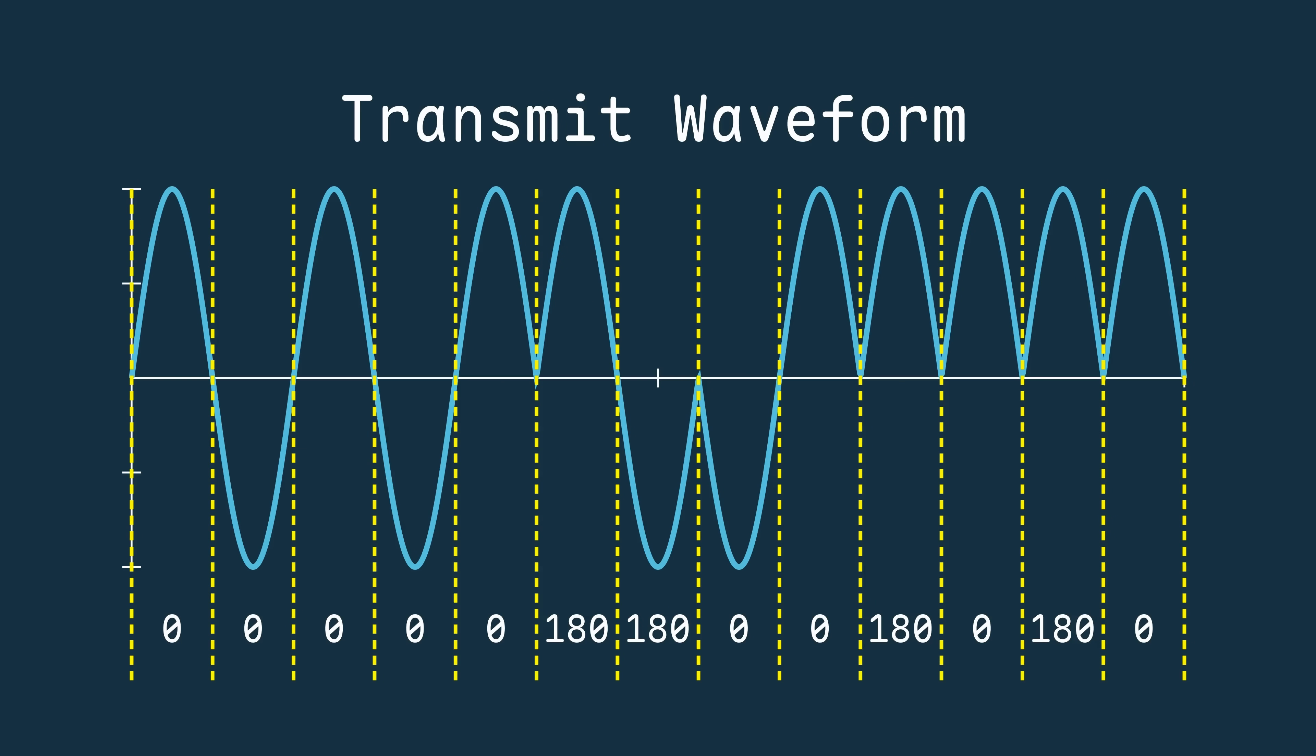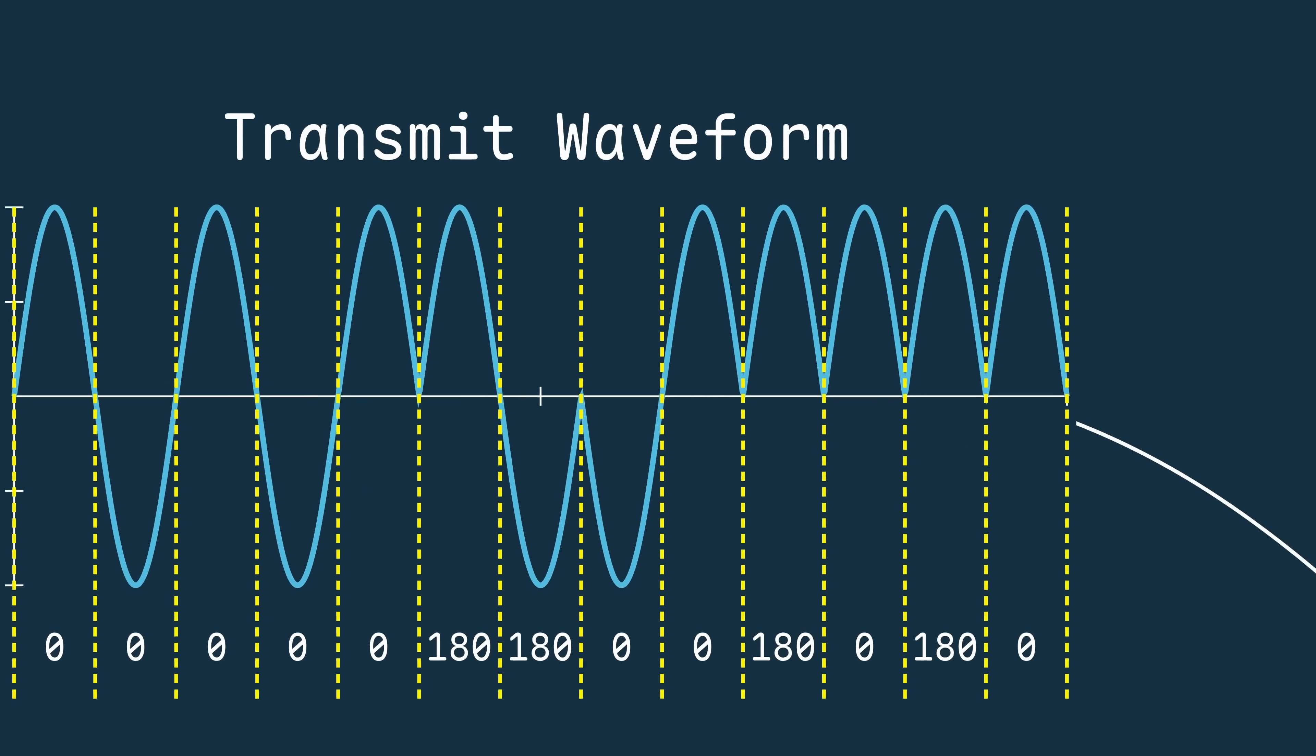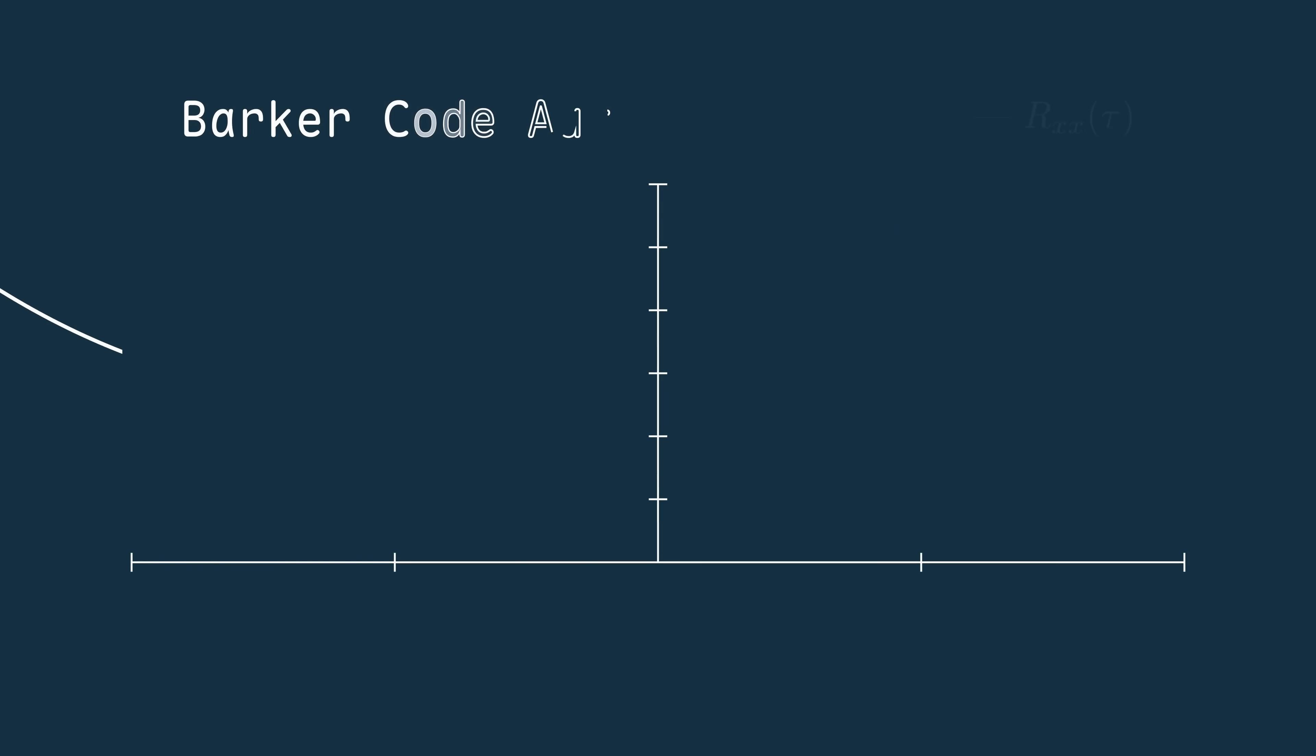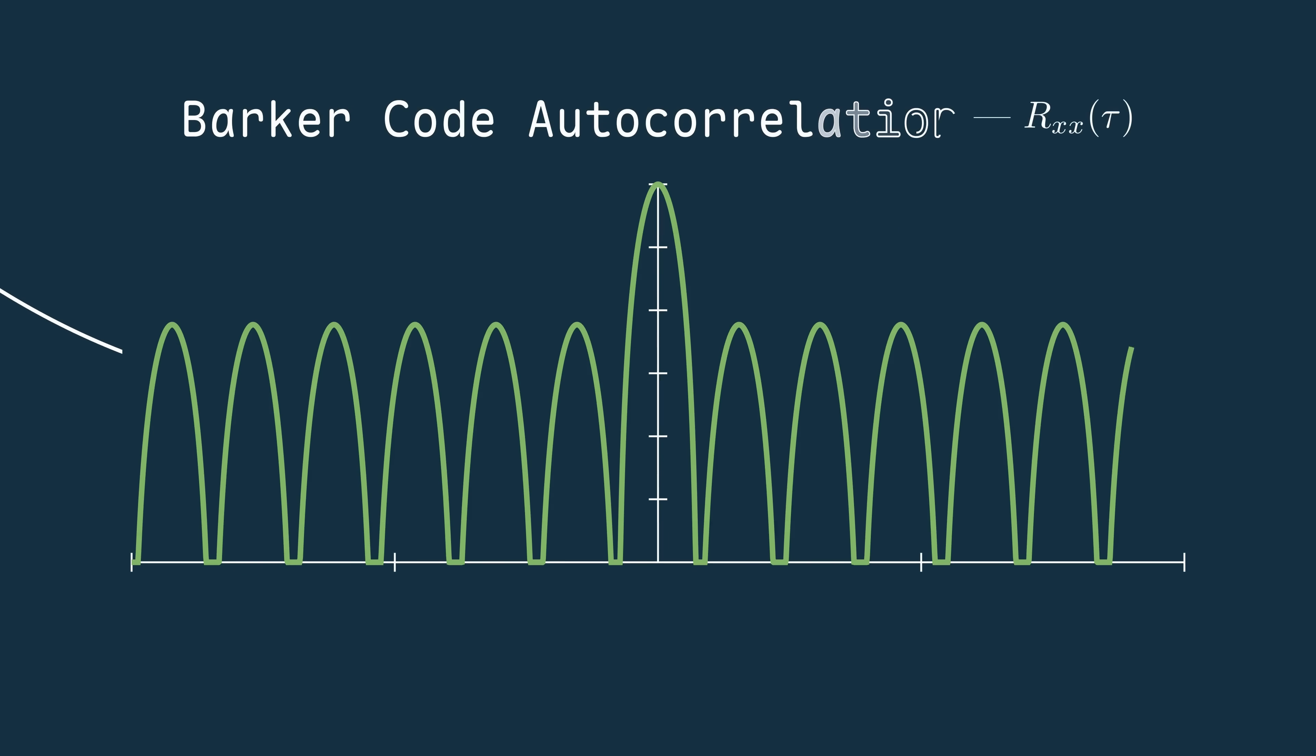It's less obvious how this method gives us non-zero bandwidth to use in our matched filter, but what's important about these Barker codes is that if you take the autocorrelation of the sequence, or the correlation to itself, you get really low side lobes at about negative 22.3 dB from the main lobe. Much better than the negative 13 dB we saw with the linear frequency modulated waveform.